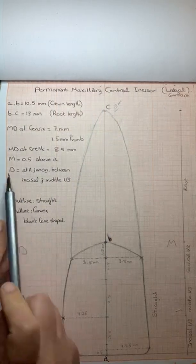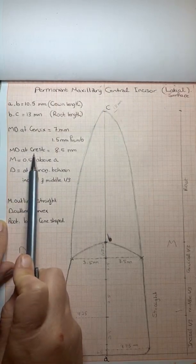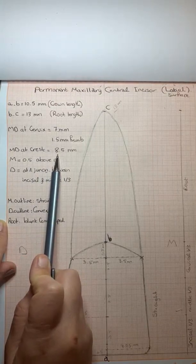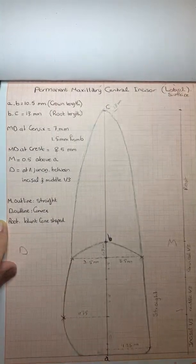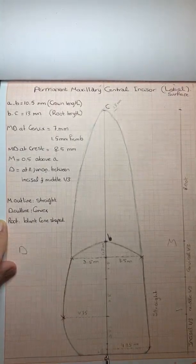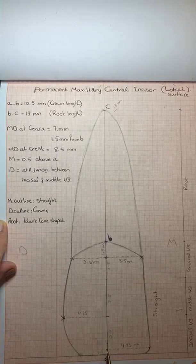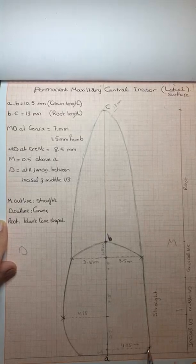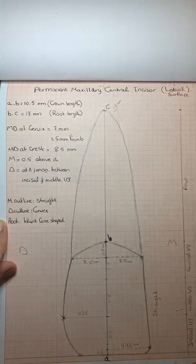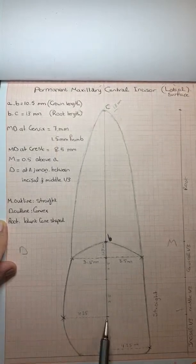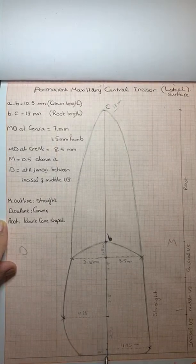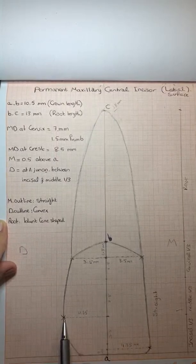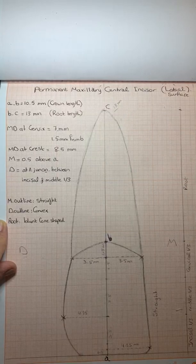The second dimension is the mesiodistal dimension at the crest of curvature, or the contact area. The distance is equal to 8.5 millimeters. Mesially, the level will be 0.5 millimeter from A, and then 4.25 millimeters towards the mesial surface. Here, the point will be the contact area. While on the distal surface, the point will be at the junction between the incisal and middle third. It's also equal to 4.25 millimeters. Here is the contact area of the distal surface.